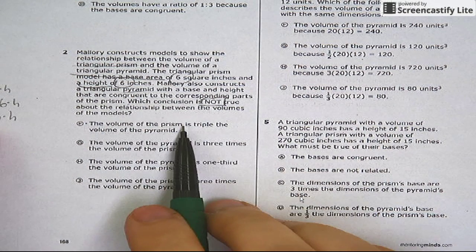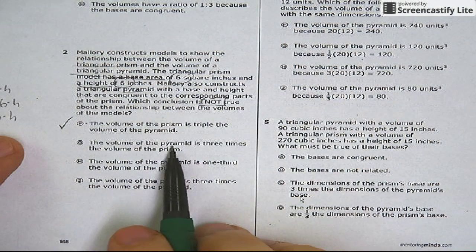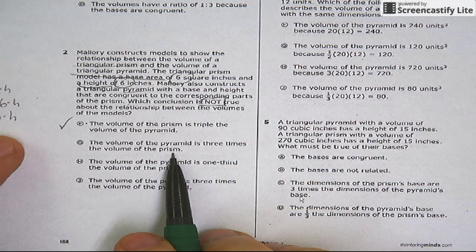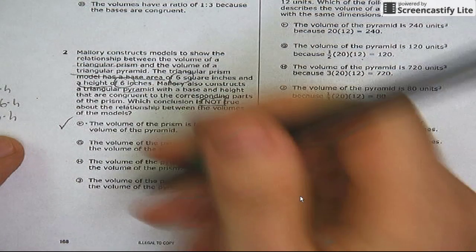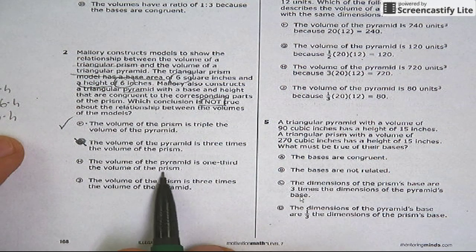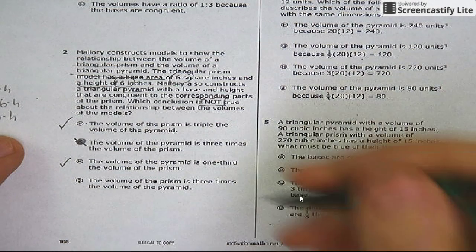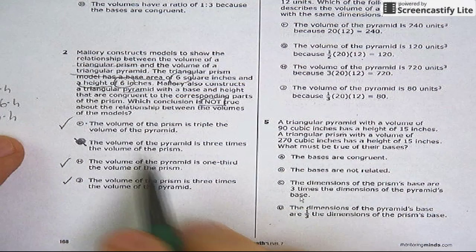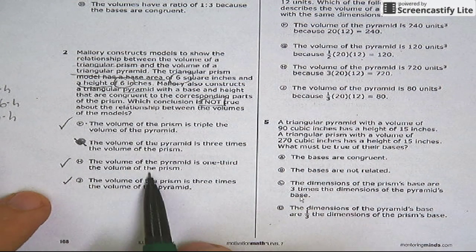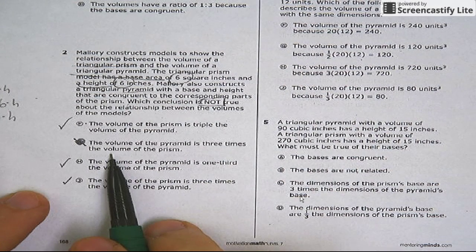Which conclusion is not true about the relationship between the volumes and the models? Let's see. The volume of the prism is triple the volume of the pyramid—sounds pretty good to me. The volume of the pyramid is three times the volume of the prism. Whoa, wait, no, the pyramid's smaller, my man. That one's wrong. The volume of the pyramid is one-third the volume of the prism—yeah, that's another way of saying it. And the volume of the prism is three times the... we just said that. Yeah, that's right. Okay, so B is the only one. In fact, even if you didn't know, that was the only one that doesn't mean the same thing as these other three. So bam, it's got to be the one.